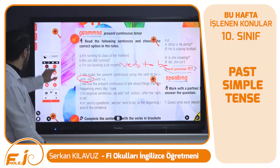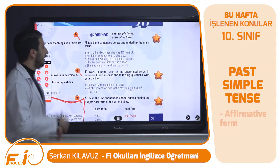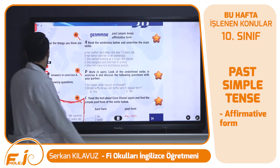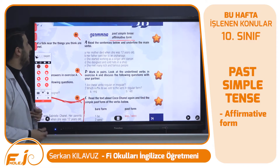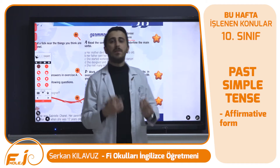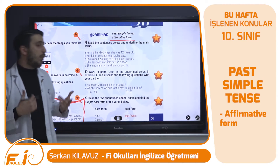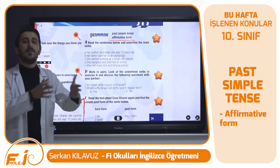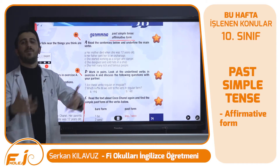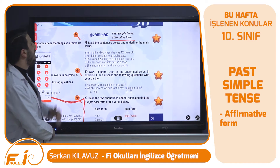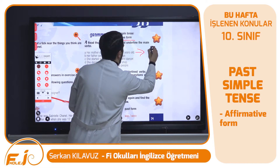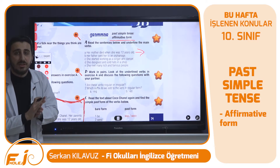Now moving to tenth class students. This week we learned new things about past simple tense in affirmative form — only affirmative forms. What is simple past tense? It's the expression of things that happened in the past. For example: her mother died when she was twelve years old. As you can see, this is in the past and there is no relation to our present.